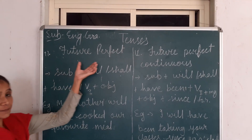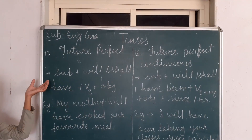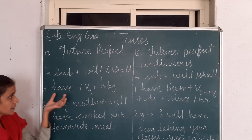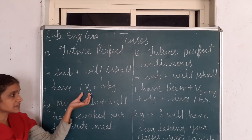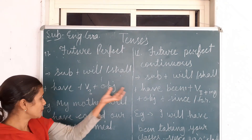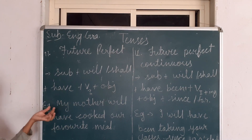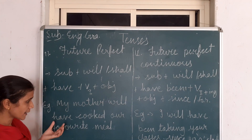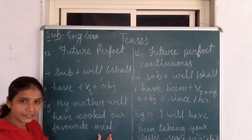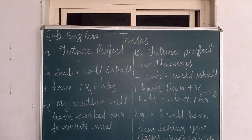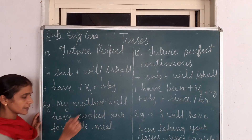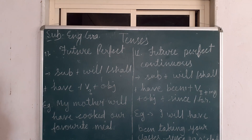Now the next is Future Perfect Tense. Sentence structure: Subject + will/shall + have + third form of the verb + Object or Complement. Example: 'My mother will have cooked our favorite meal.' For negative, after 'will' we use 'not' and then the remaining part stays the same.